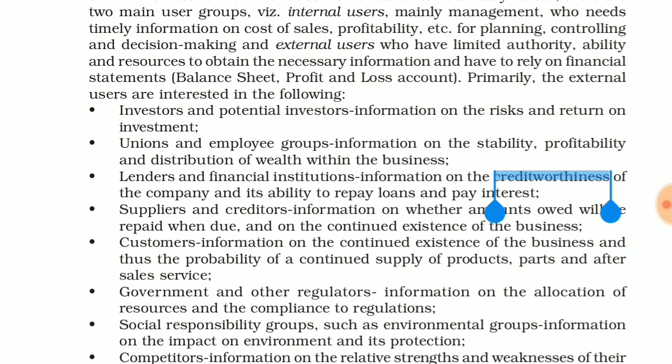The first point is investors and potential investors — information on the risk and return on investment. The money they put in the company — how will they get the return? They want to know. The second point is unions and employees — information on the stability, profitability and distribution of wealth within the business. When there is a profit in any company, how will they distribute it?